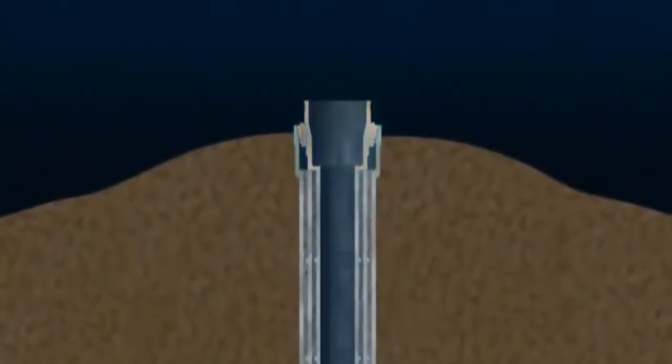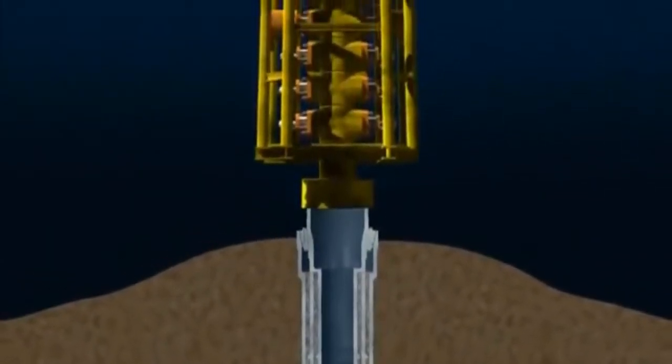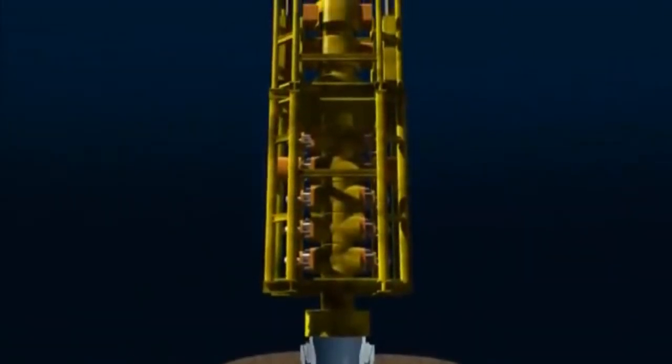A blowout preventer, BOP, a robust set of valves that can shut in the well even if the drill string is down the hole, is then lowered and locked onto the wellhead.